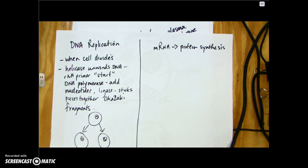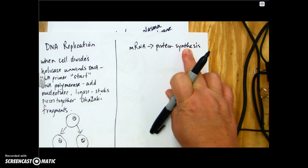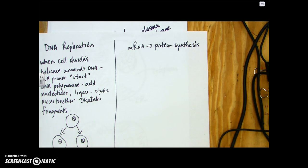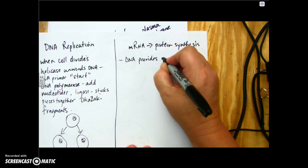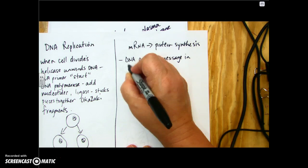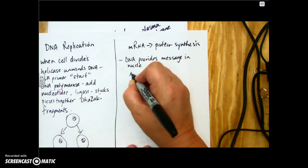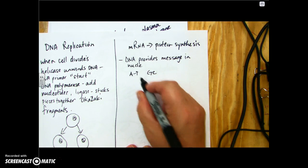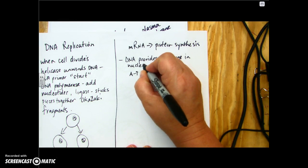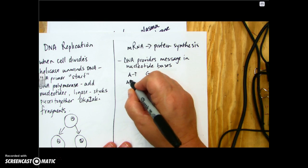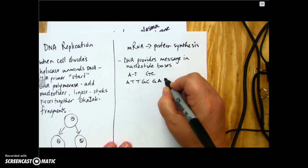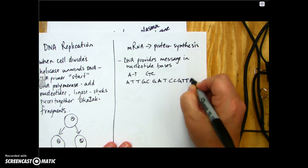Protein synthesis is for the purpose of synthesizing or making a protein. In order to make a protein, we have to get the message or the recipe from the nucleus. DNA provides the message in nucleotide bases — the nucleotides are the bases, and the combination of those bases gives the message. If the bases are in a specific order, that order says 'make this protein.' For example: ATT GCG ATC CGT TA — that's the message for one protein.